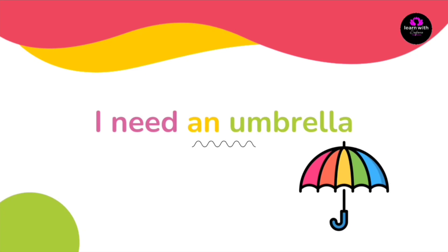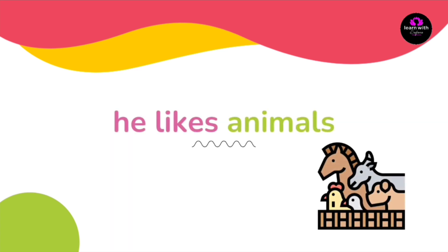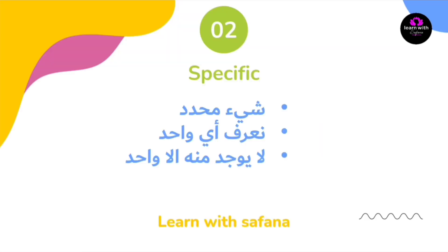I need an umbrella — احتاج مظلة واحدة. ونقدر نقول: He likes animals — هو يحب الحيوانات، وهنا no article. ليه؟ لان animals هنا ما حددنا اي حيوان بالضبط اللي يحبه، عشان كذا جات الجملة بدون article. النوع الثاني specific — يكون شيء محدد نعرف اي واحد، او لا يوجد منه الا واحد فقط في العالم.